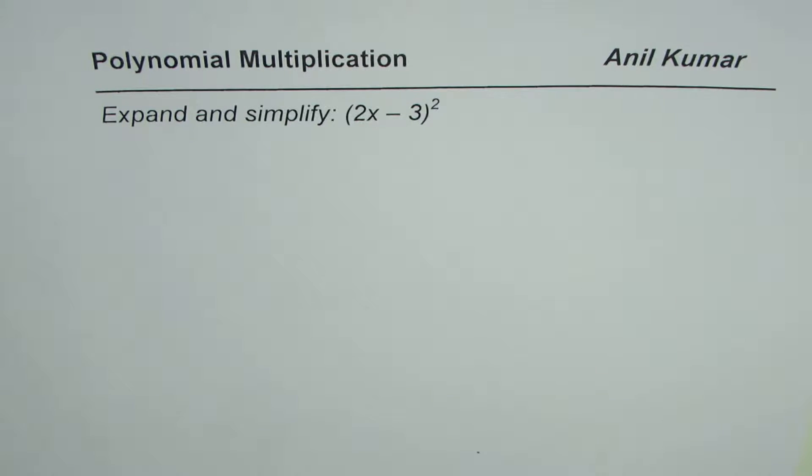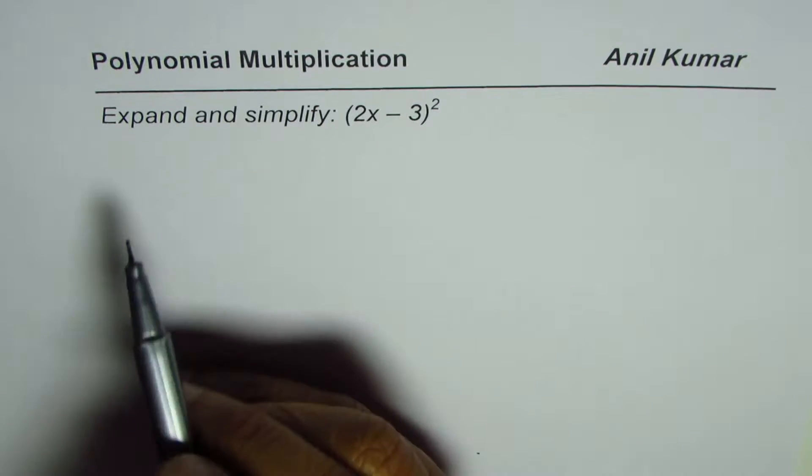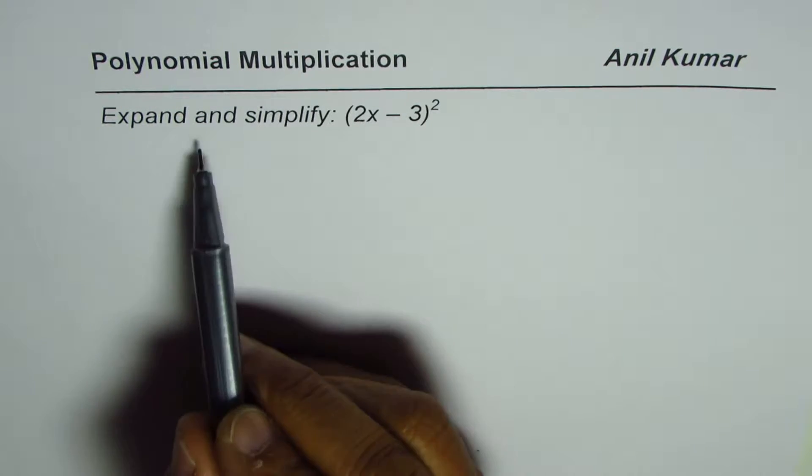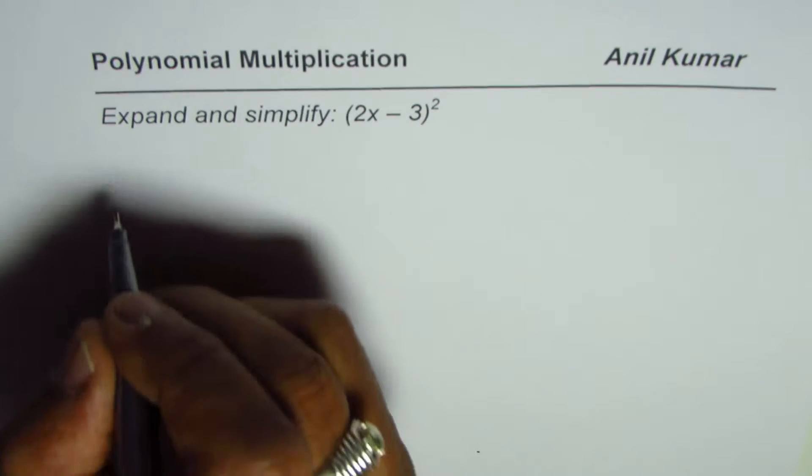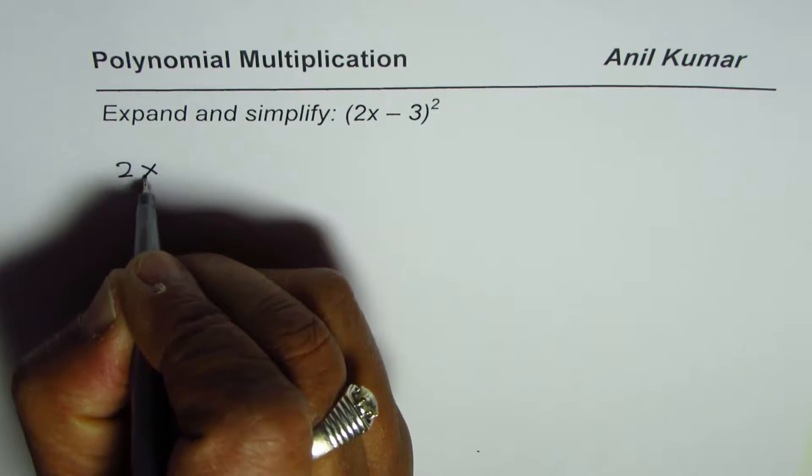I'm Anil Kumar and this is for my students who have just started learning multiplication of polynomials. The question here is expand and simplify (2x - 3)². So let's understand what it means.